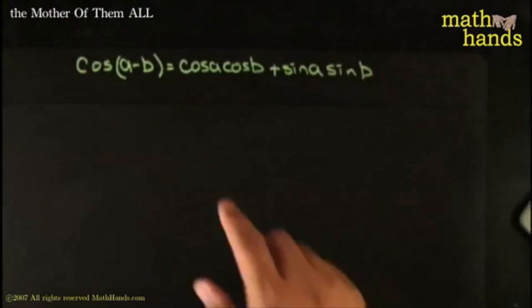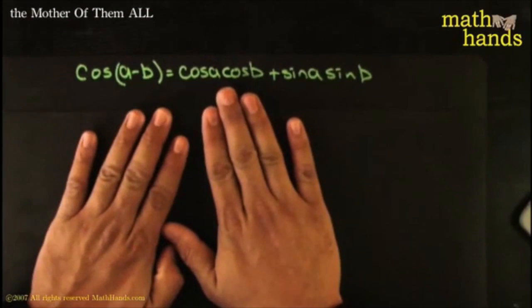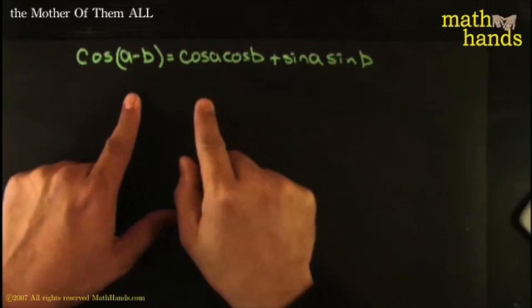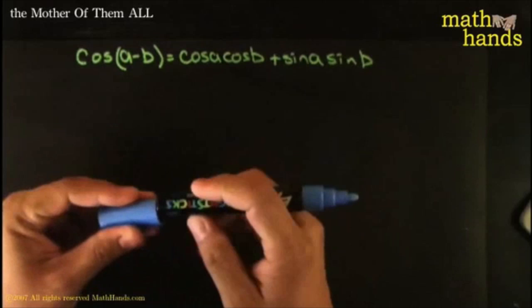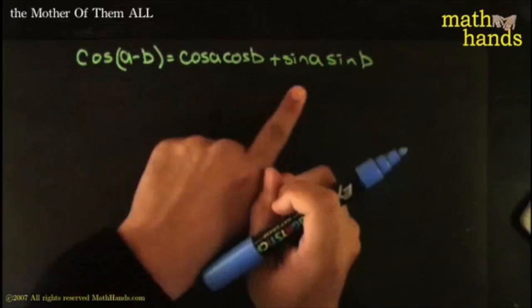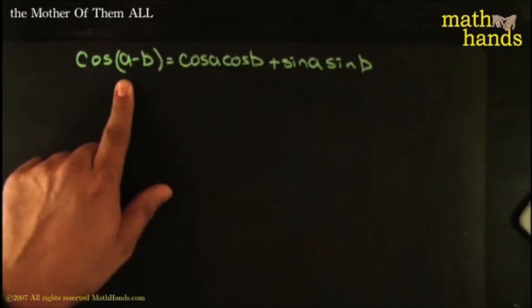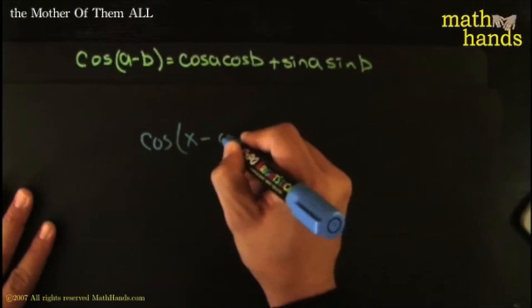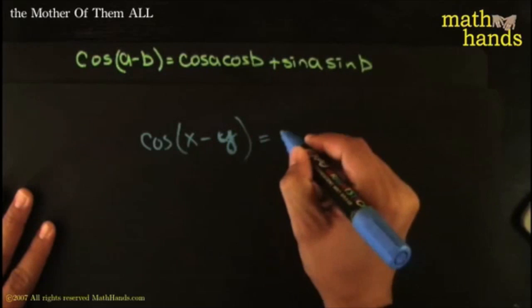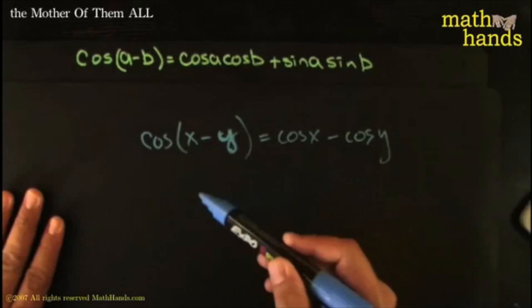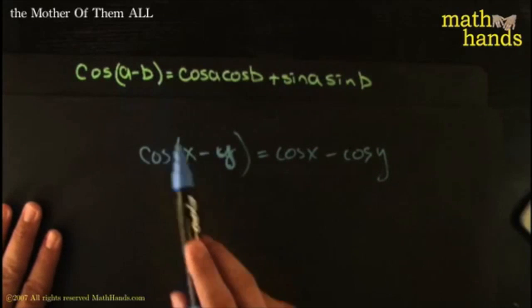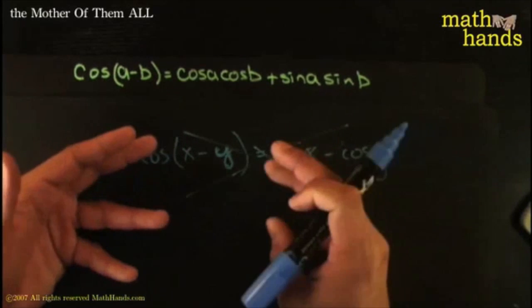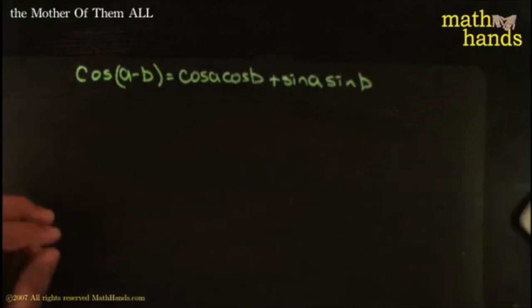Assuming this one is true already — we'll prove it later using some amazingly creative idea — let's see how that one helps you prove all the other ones. A lot of people will do this naively. They'll say cosine of X minus Y equals cosine X minus cosine Y. Nothing could be further from the truth. This identity tells you exactly how to handle cosine of something minus something. These functions don't behave like numbers. That was just a little word of caution.